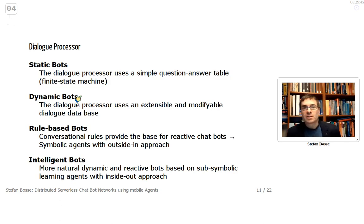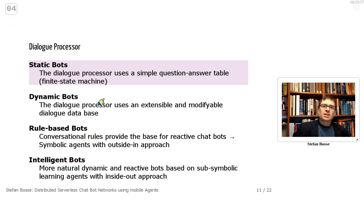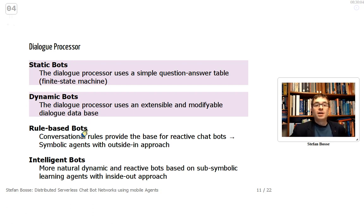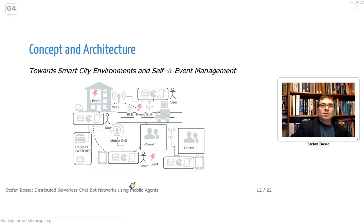The dialogue processor is an important part of the chatbot agent architecture. We have static bots — the dialogue processor uses a simple question-answer table or finite state machine. Dynamic bots use an extensible and modifiable dialogue database. Rule-based bots use conversational rules providing the base for reactive chatbots — basically simple symbolic agents with an outside-in approach. Finally, intelligent bots are more natural, dynamic, and reactive, based on sub-symbolic learning agents with an inside-out approach.